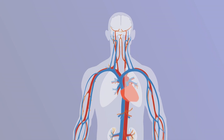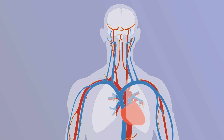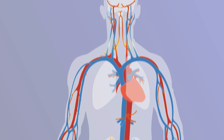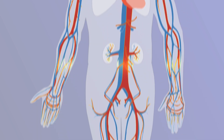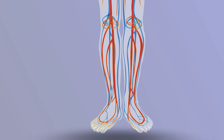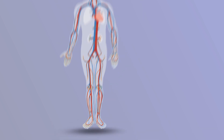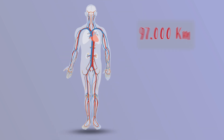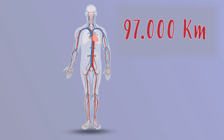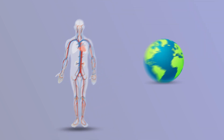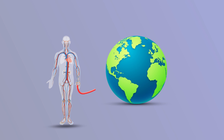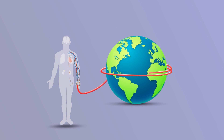I have a curiosity — do you know how much all of the arteries and veins would measure together put in single file? They would measure 96,000 kilometres, which would be equivalent to almost two and a half laps of the earth. It's incredible!